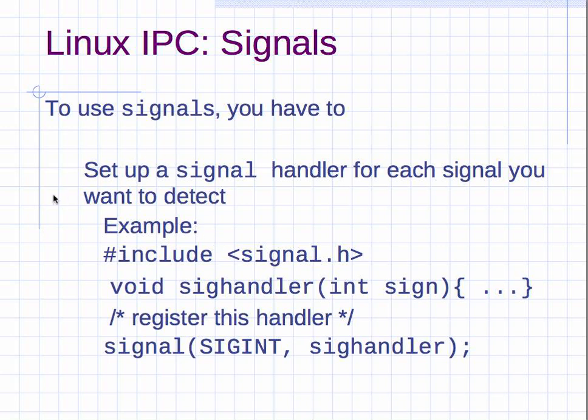How do you use it? You have to include signal.h. You have to set up a function sig_handler—this is your function—so that when your process gets a SIGINT signal, this function will get called by the system. To use signals, you have to set up a signal handler for each signal you want to detect. So if you want to detect more than one signal, you have to call signal more than once.